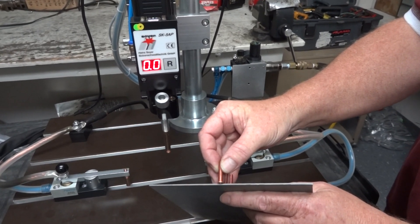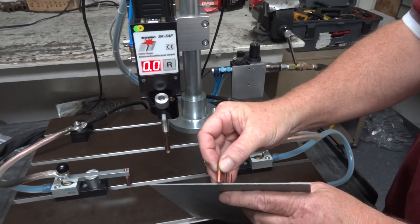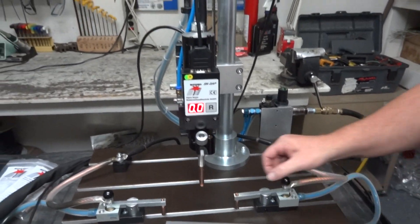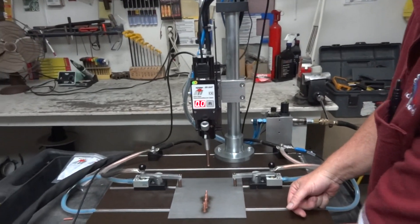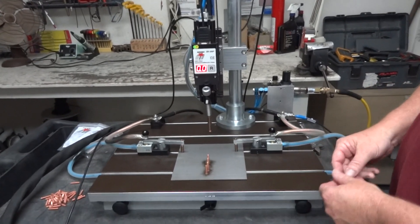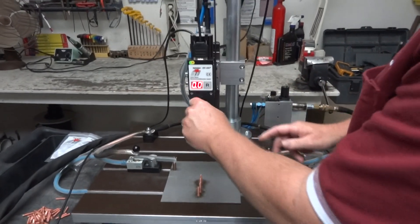We want the immersion depth to be about two millimeters and the lift to be about two millimeters. It doesn't have to be that, but that's just a good starting point for most of these welds. We just want to make sure we have a stud loaded into the weld head.